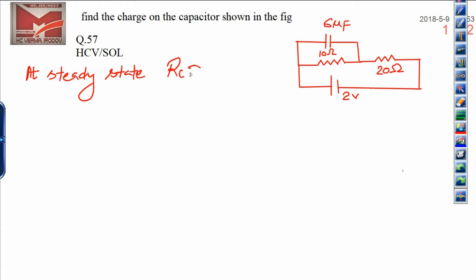Now let us see, at steady state, resistance of the capacitor is taken as infinity. It means the capacitor will block current flow.